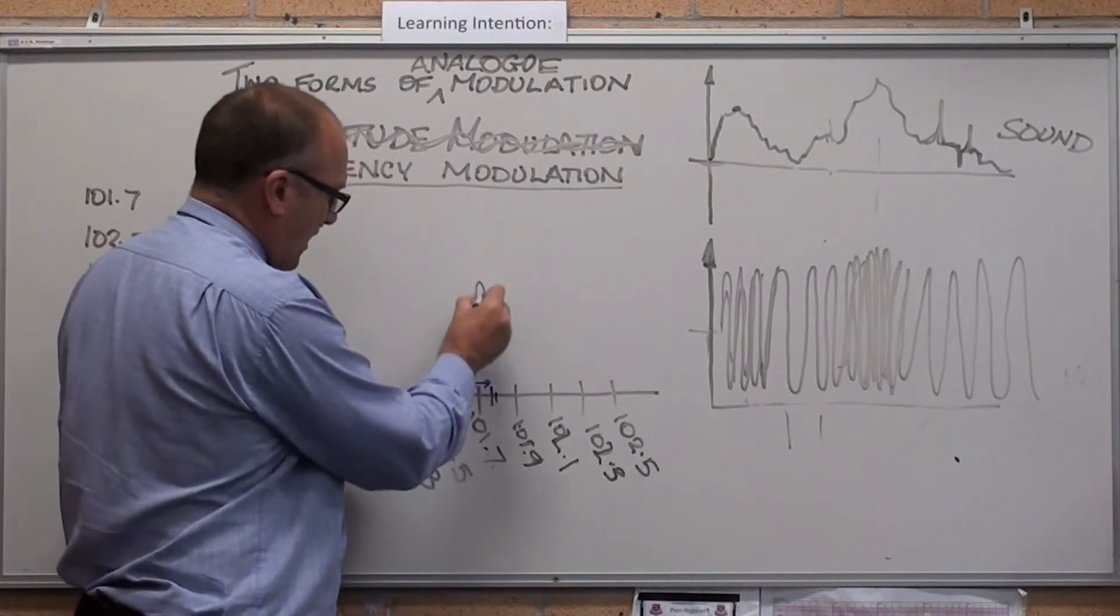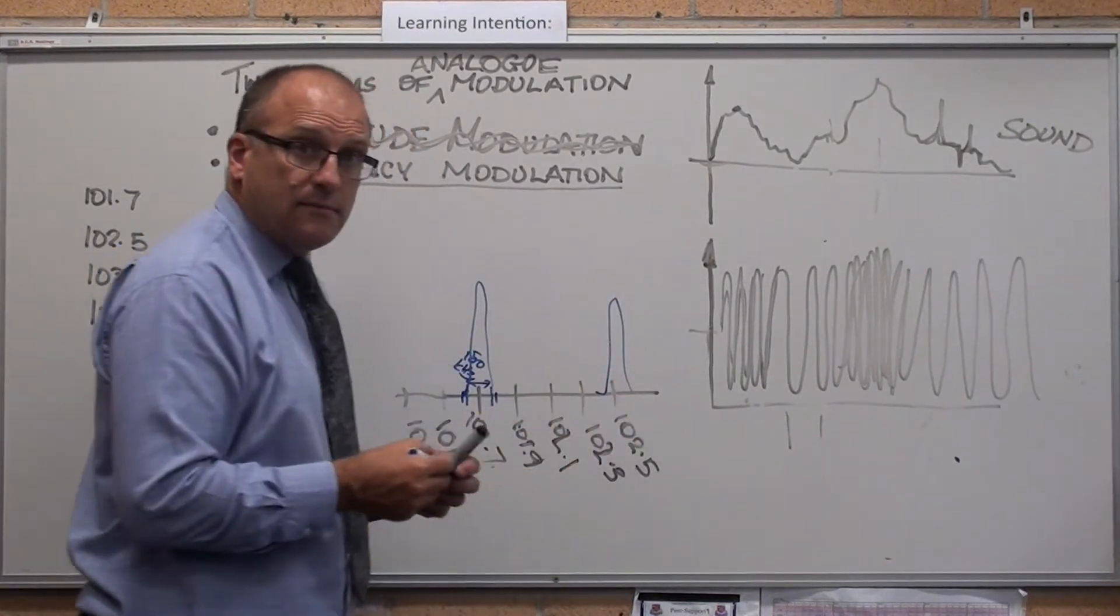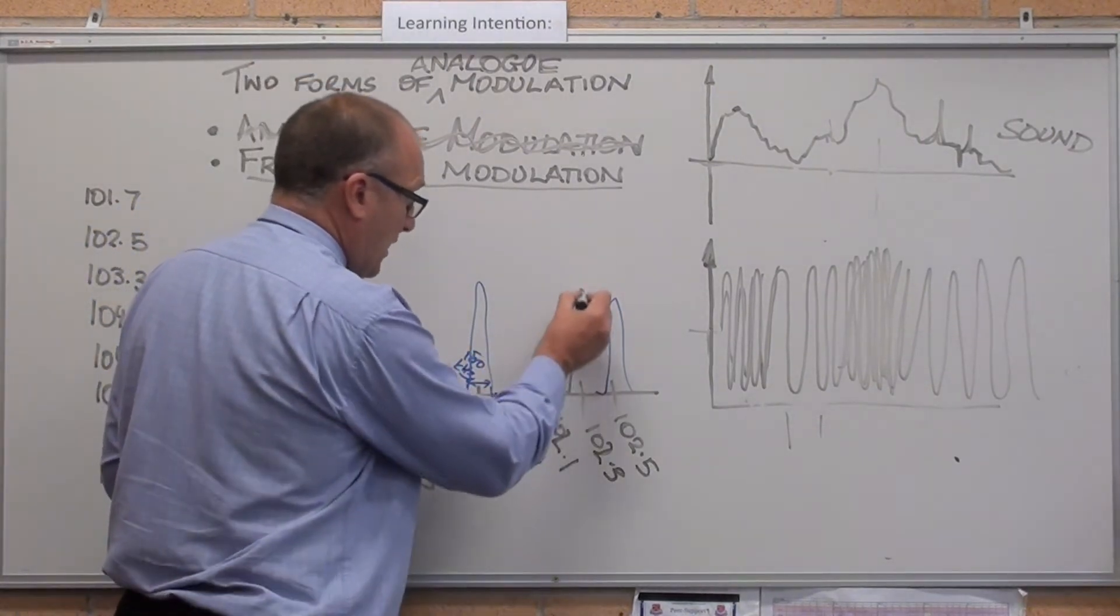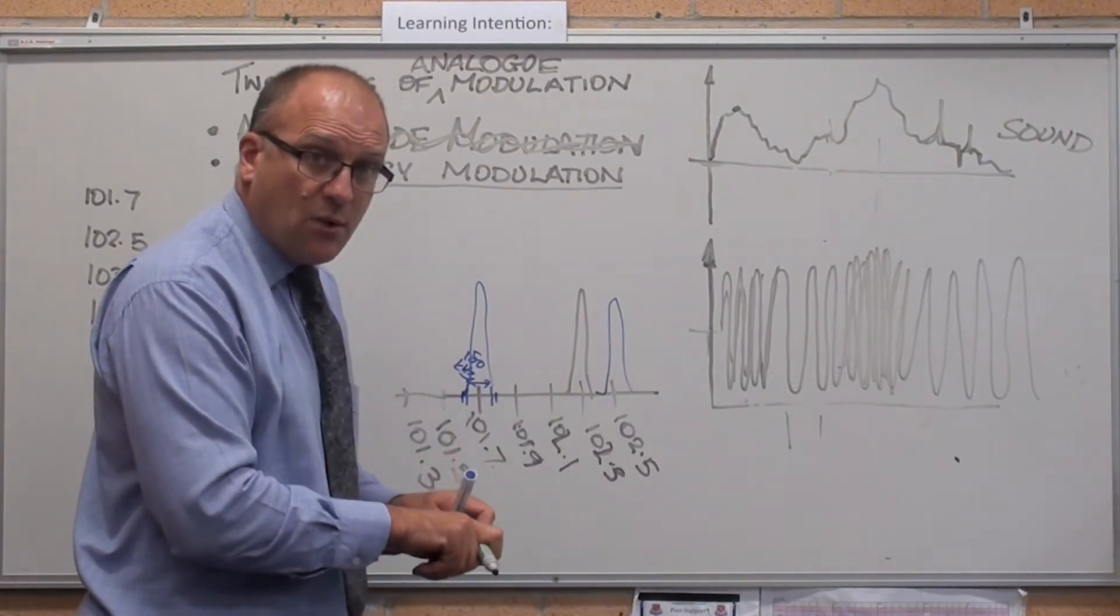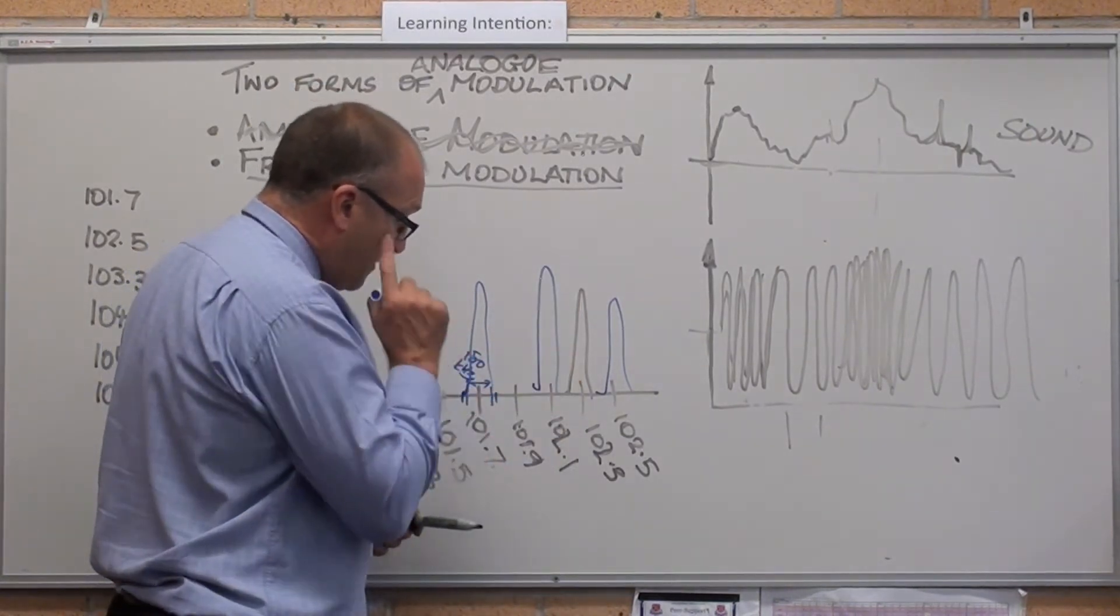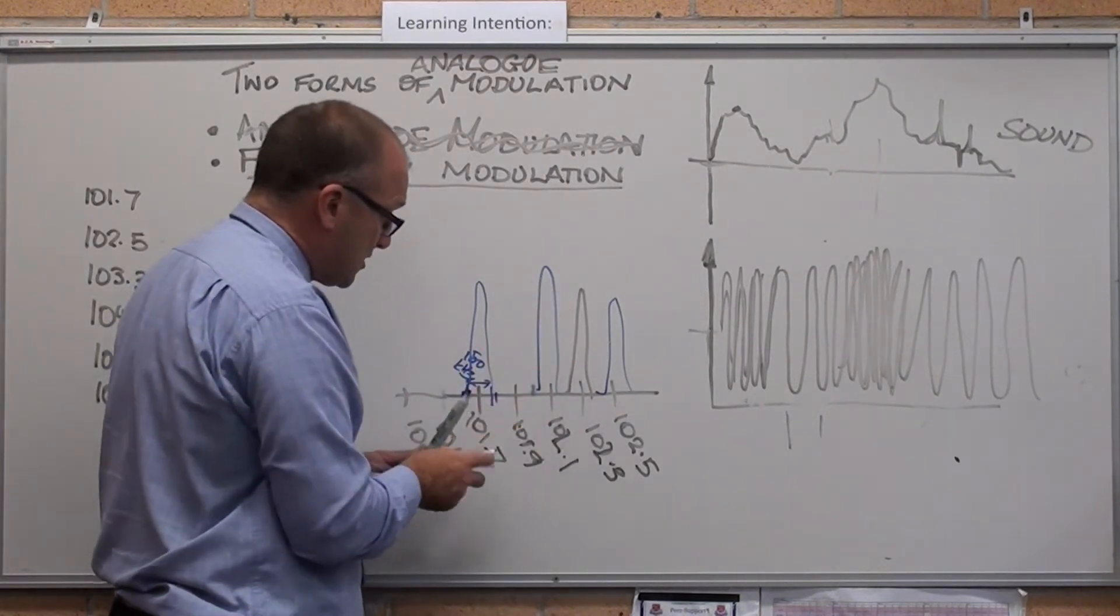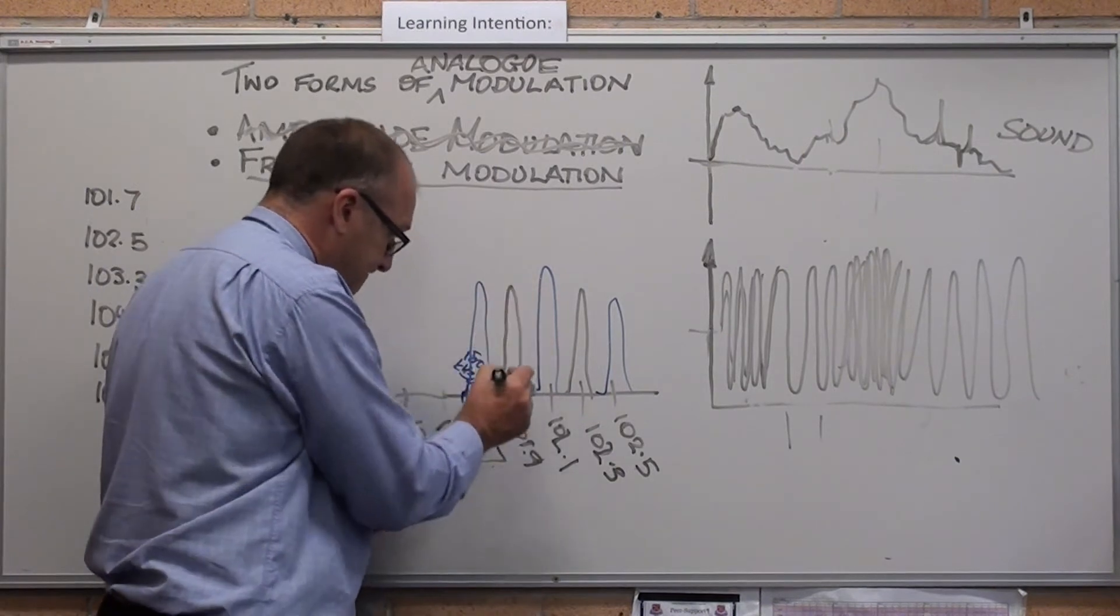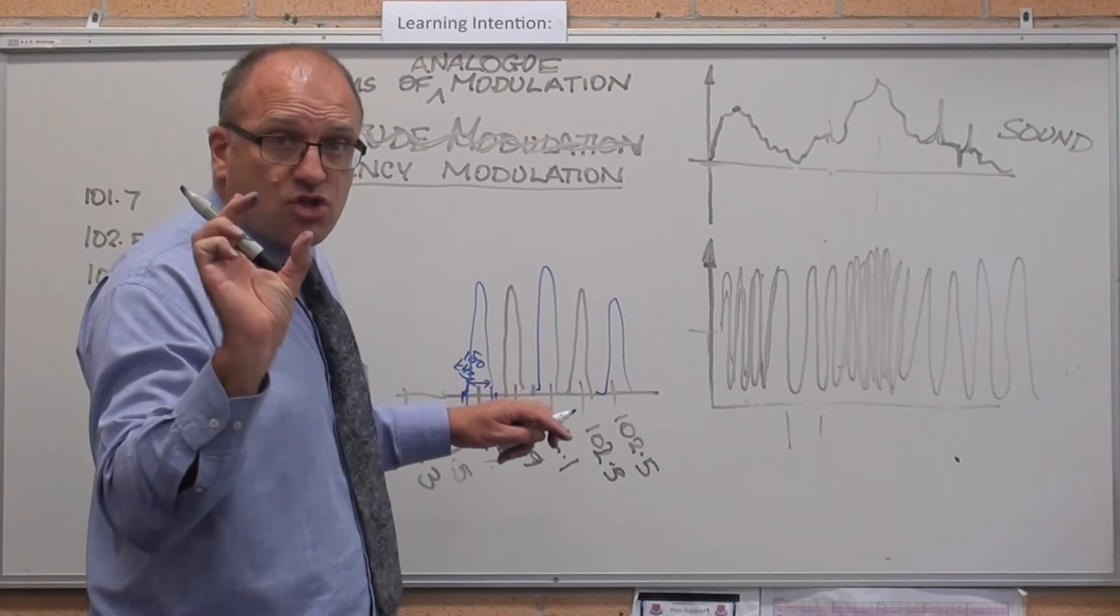But it is to operate on 150 kilohertz bandwidth. Which means that might be 101.7. Here's 102.5 in Sydney. Then of course, Blue Mountains have got a radio station. That might be 102.3. That might be the Blue Mountains. So they can transmit and they don't interfere with the Sydney one. Now, Wollongong might transmit there 102.1 across that range of frequencies. That might be Newcastle.